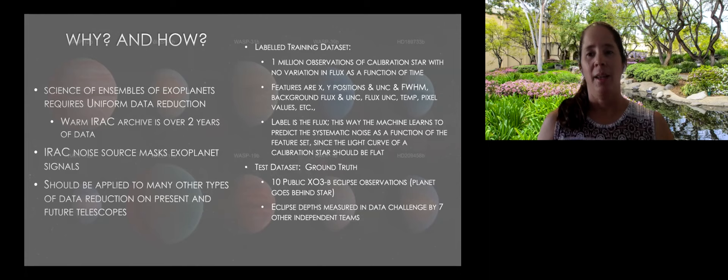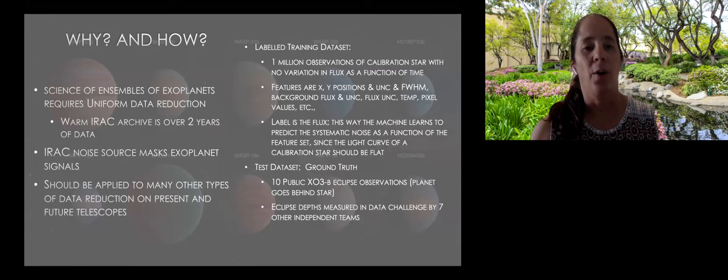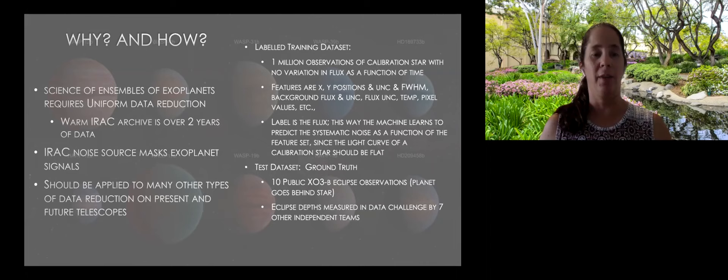That means not just studying a single exoplanet in its atmosphere, but what does the entire population of hot Jupiters look like, or what does the entire population of Earth-like planets look like? In general, in order to do science on ensembles of data, you need to do uniform data reduction. And just to give you an example, the infrared array camera on Spitzer, the archive, which is only exoplanets and brown dwarfs is over two years of data. So this is a lot of data, very specific to exoplanets and brown dwarfs. And the noise source in this data masks the exoplanet signal. We need to get rid of that noise, or we need to in some way account for the noise. This application should be useful for data reduction on many present and future telescopes.